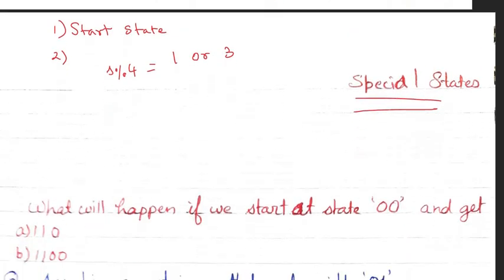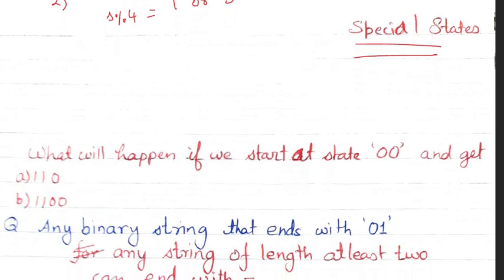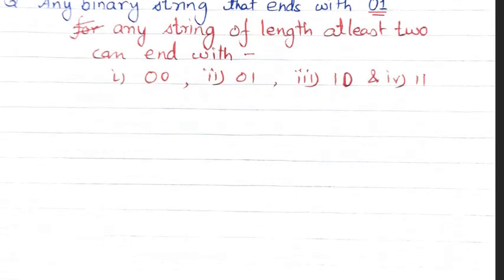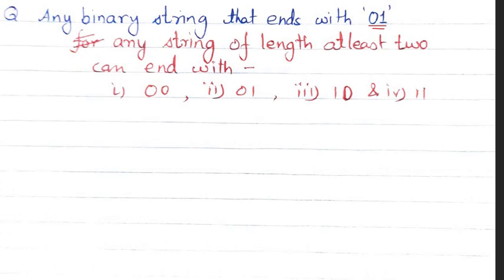Now we turn to another example: identifying a binary string that ends with 01. When we talk about such a finite state automata, a binary string of at least length 2 can end with 00, 01, 10, or 11. So we need states to track the last two digits, and our final state will correspond to the last two digits being 01.